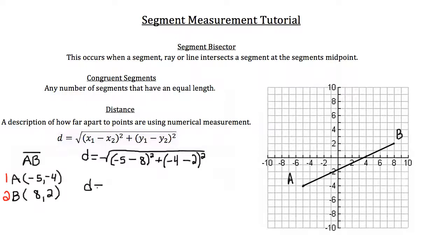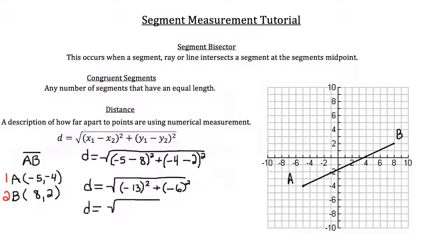Simplifying inside the parentheses: negative 5 minus 8 is negative 13, and negative 4 minus 2 is negative 6. Squaring those values under the radical: negative 13 squared is positive 169 and negative 6 squared is positive 36. Adding those together under the radical gives 205, so the distance between points A and B is the square root of 205.